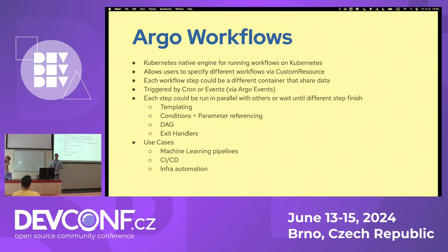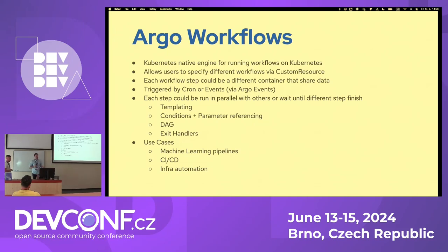Here is Argo Workflows — it's from the Argo family of products and is similar to Tekton. You can run specific workflows, or pipelines, that do whatever you want — shell scripts, Python for data science or ML, etc. It provides a Kubernetes-native experience, with everything defined in custom resources. Each workflow step can be a different container, similar to Tekton, and you can define different resource specifications for each container.